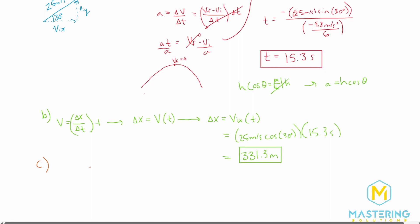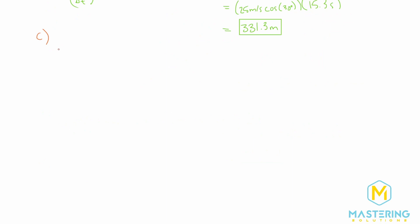For part C they ask how much further the ball would go on the moon than on the earth. We already found the moon distance, so now we find the earth distance and subtract. I'll combine the equations into one step to save time. For earth, delta-x equals v_ix times time, where the initial x-velocity is still 25 meters per second times cosine of 30 degrees — the only difference is that gravity is different on earth.